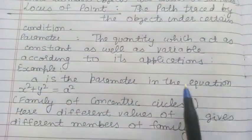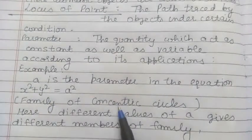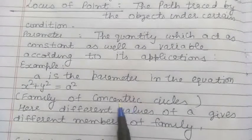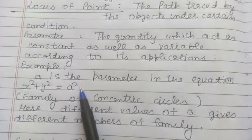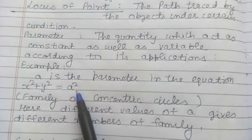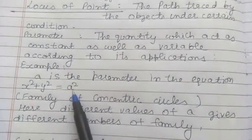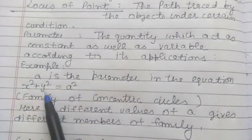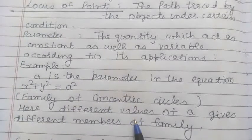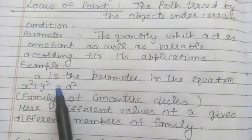Let us see by an example. Suppose we have the family of concentric circles — concentric circles means circles which have the same center. The equation of the family of circles is given by x² + y² = a². Here, a is called the parameter. If we give different values to this parameter a, we get different members of this family. For example, if we take a = 2, then x² + y² = 4, which is one member of this family. Here a is the parameter, which is also called the radius of the circle.